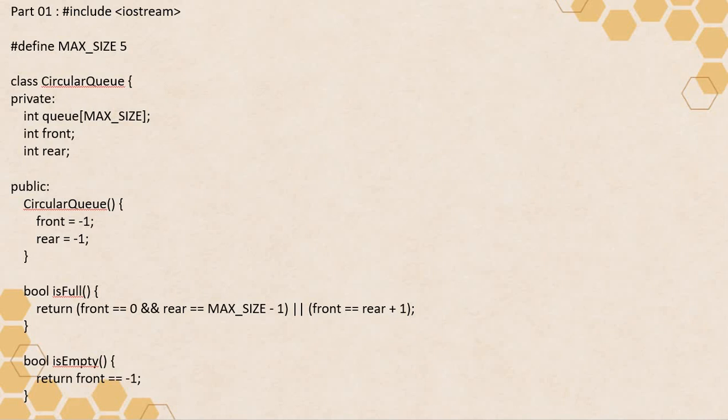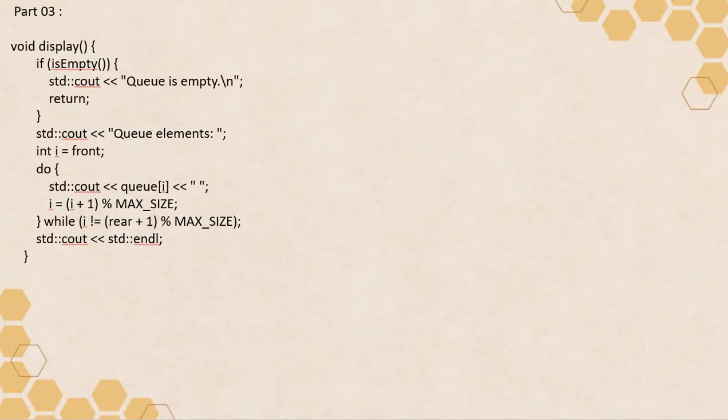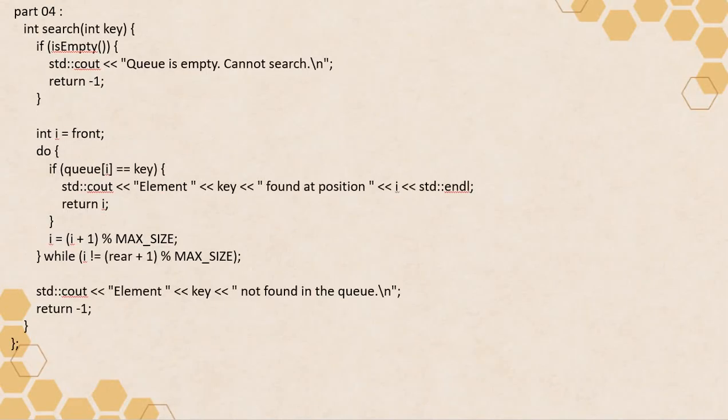This is the very first part. Here you have a code which is having these many lines and is identified as Part 1. You can pause the video and understand what this part is doing. Then you have Part 2, Part 3, and similarly Part 4.